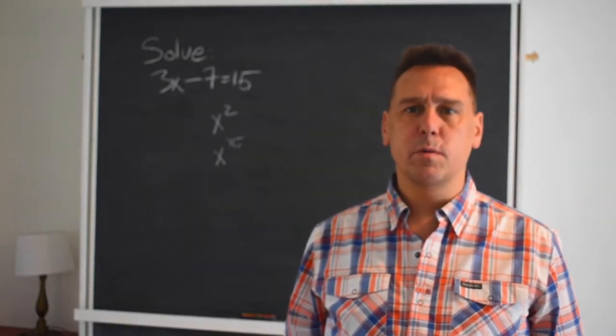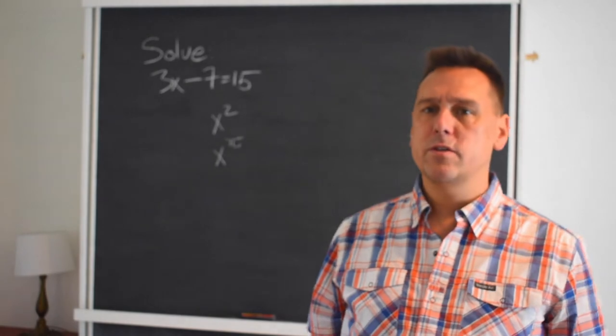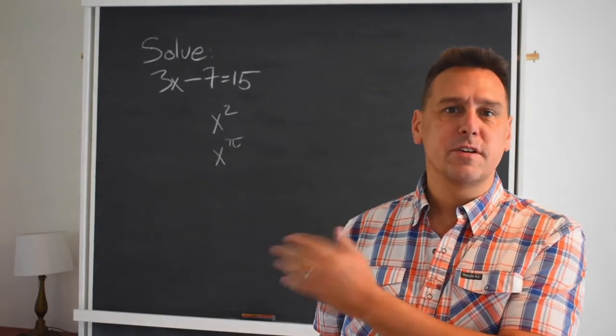Previously, we started with a very simple problem: to solve the equation 3x minus 7 equals 15.